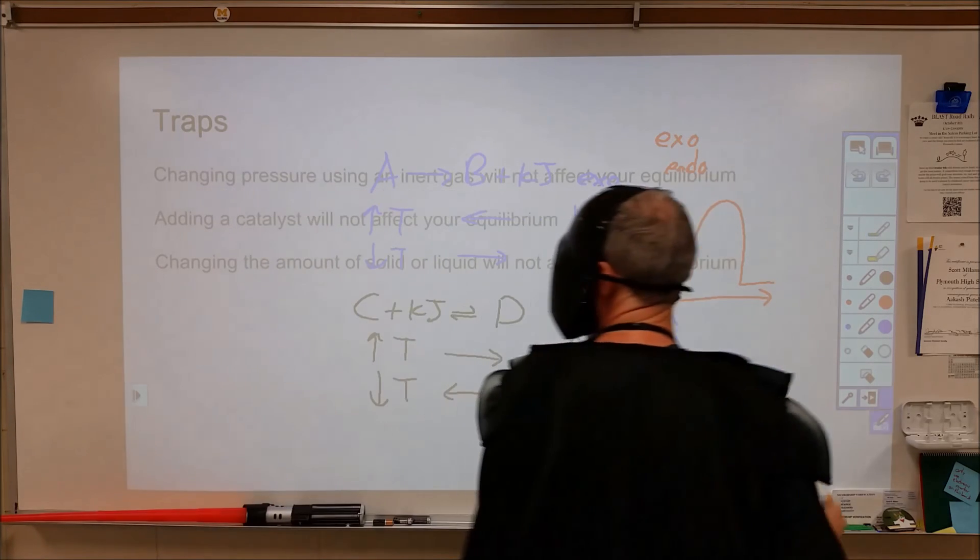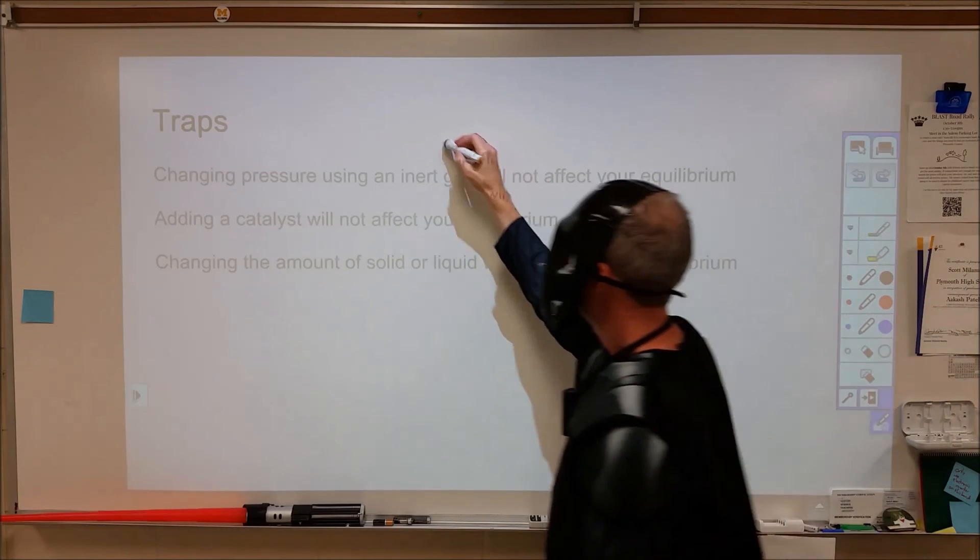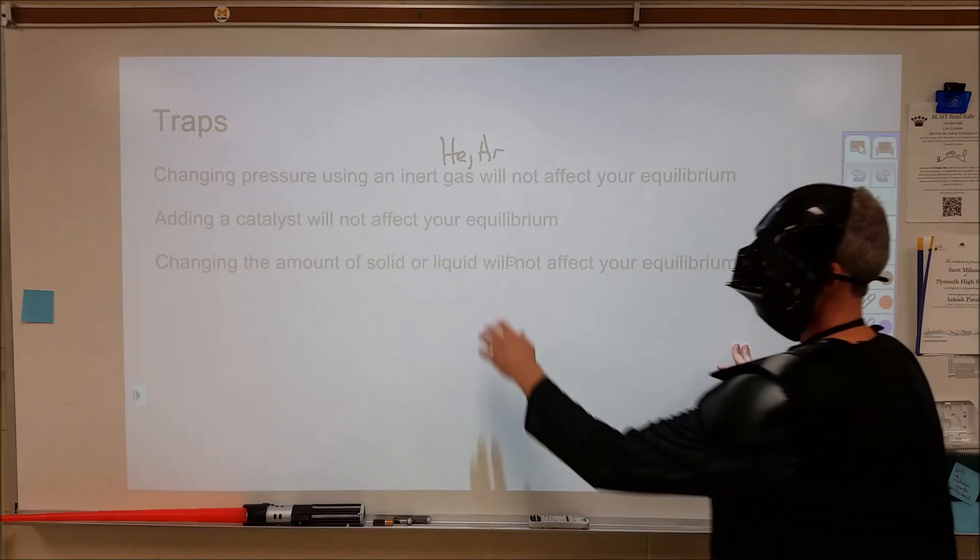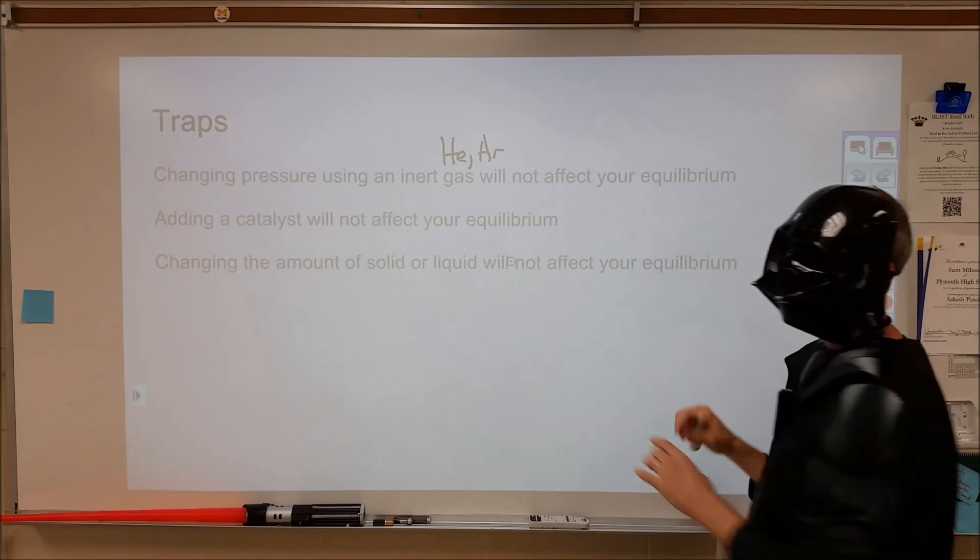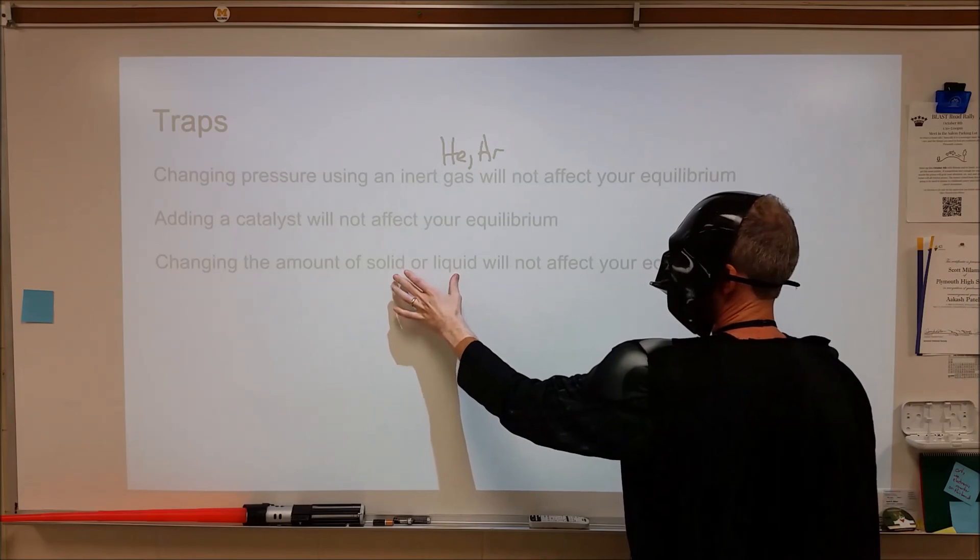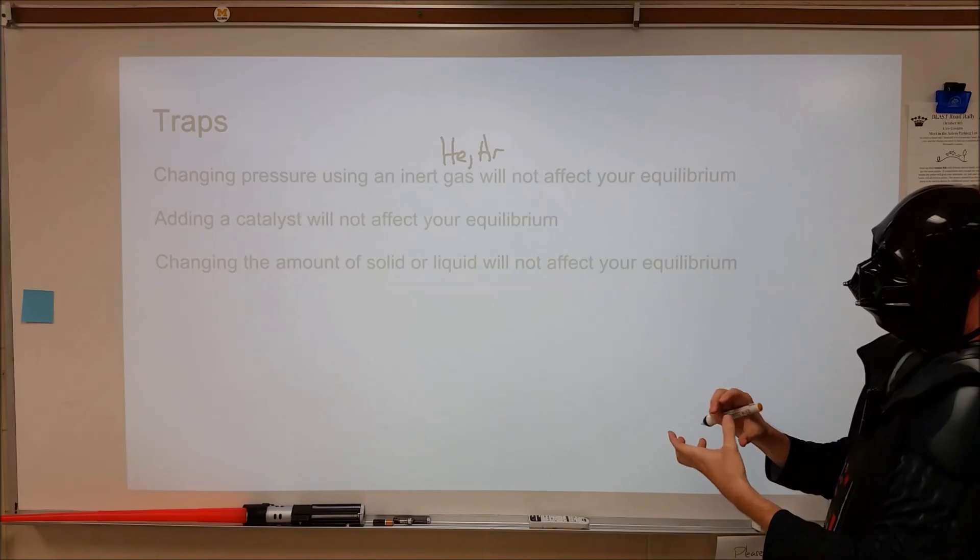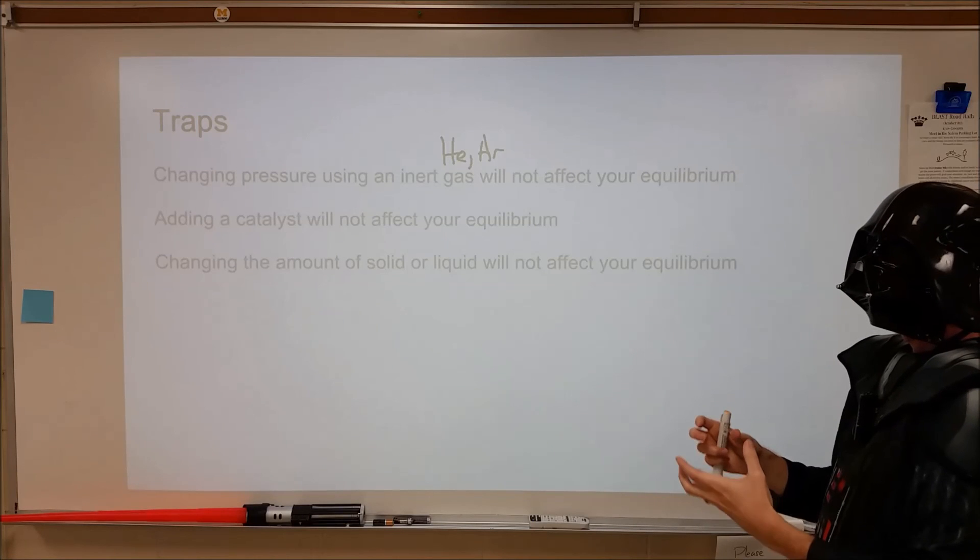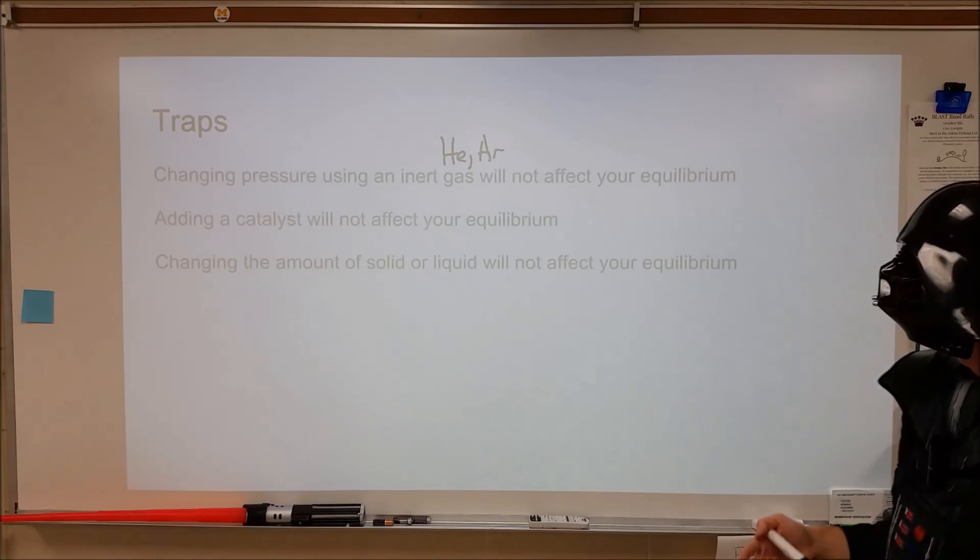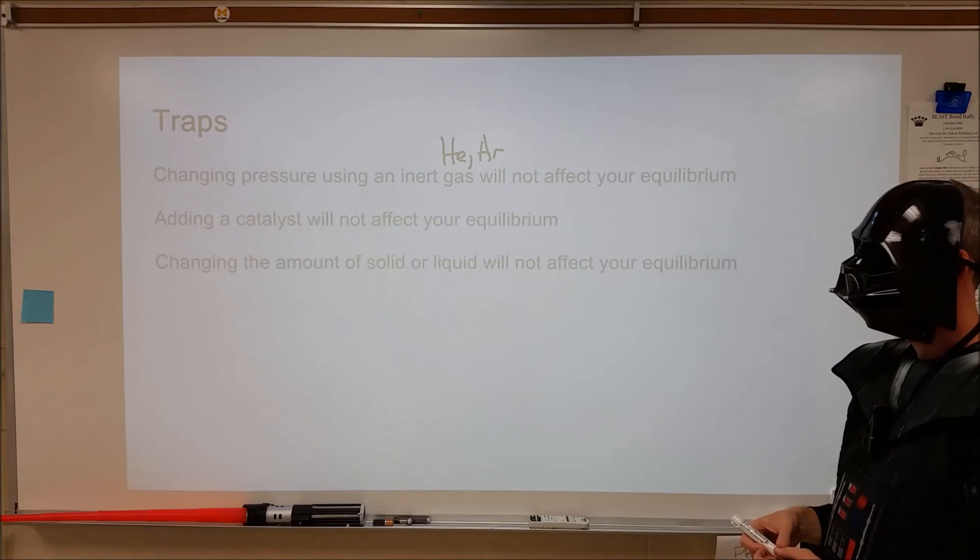There are a few traps to watch out for. If you are changing the pressure using an inert gas, if they say you add helium or argon or something like that, that will not affect your equilibrium. If you add a catalyst, it will affect how quickly you get to equilibrium. It will not change your equilibrium positioning. If you change the amount of solid or liquid, that will not affect the equilibrium as solids and liquids have the same concentration regardless of amount. As long as you have sufficient solid or liquid to have the reaction reach equilibrium, the amount beyond that will not affect anything in your equilibrium. Therefore, it won't cause a shift to occur.